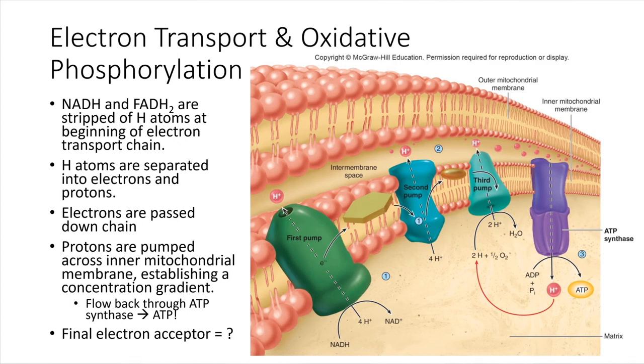So the electron transport chain, this is something that exists in mitochondria, and what's going to happen is all of those electron shuttle molecules that we generated, all of the NADH and FADH2s, they are all going to come over here inside of the mitochondria, they're going to bring their electrons over and hand them off at the electron transport chain.